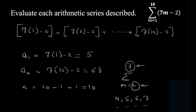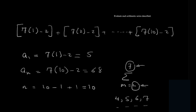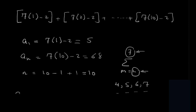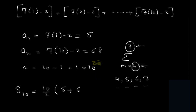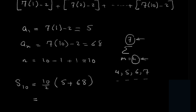Now we have everything we need, so we replace in the formula. Since we have 10 terms, we write S10 equal to n over 2, which is 10 over 2, open bracket, the first term a1 which is 5, plus the last term which is 68. By calculator we get 365.